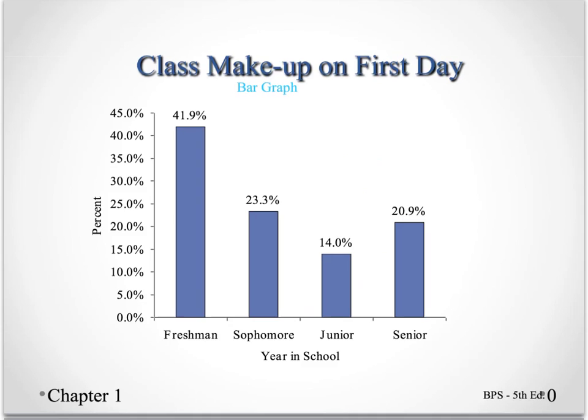Here is yet another way to look at this categorical data — we can look at it in what we call a bar graph. What we've done is put what the variable is on the horizontal axis.